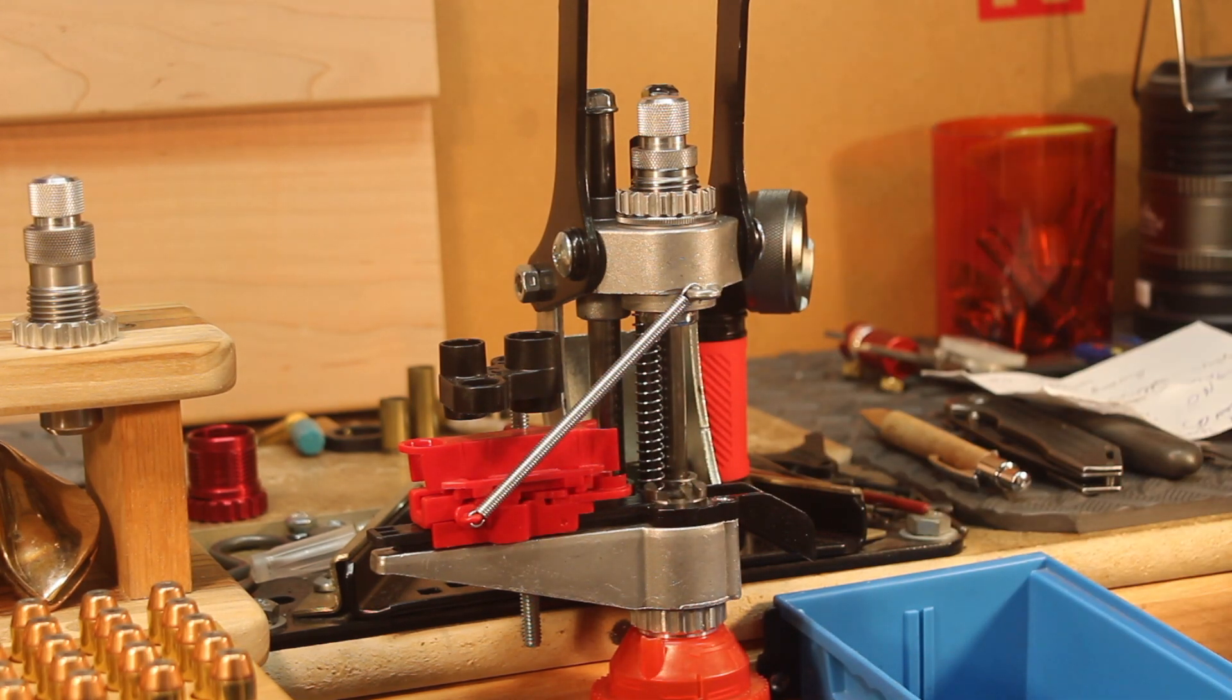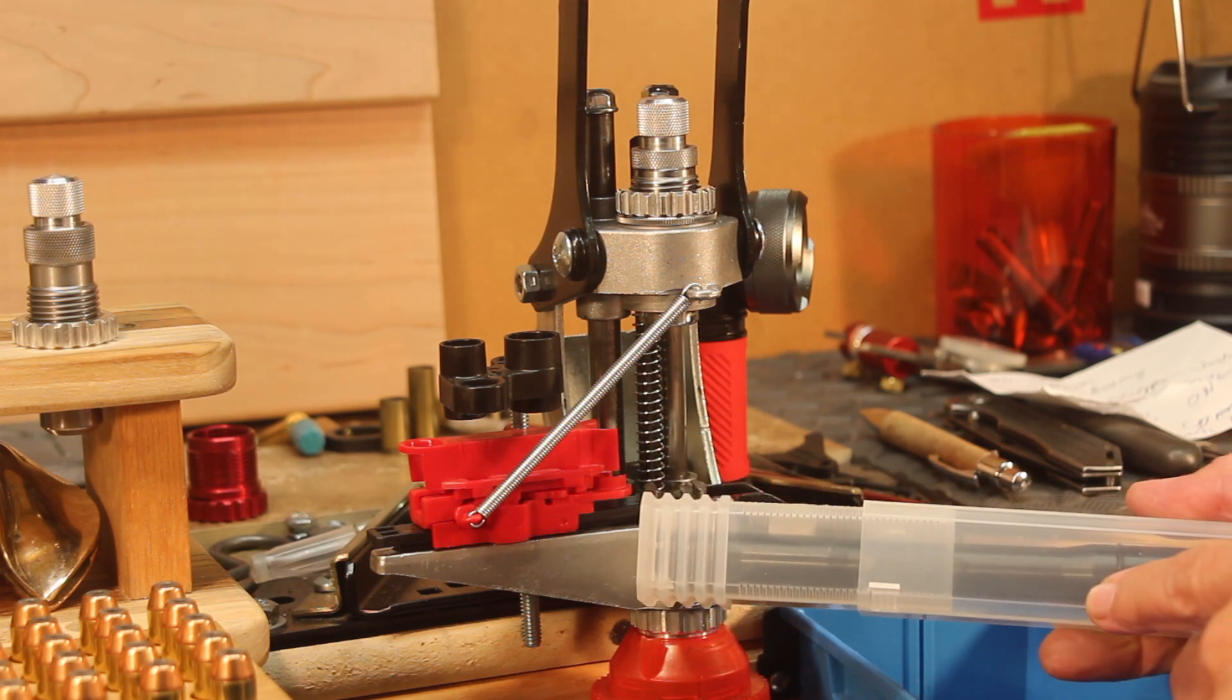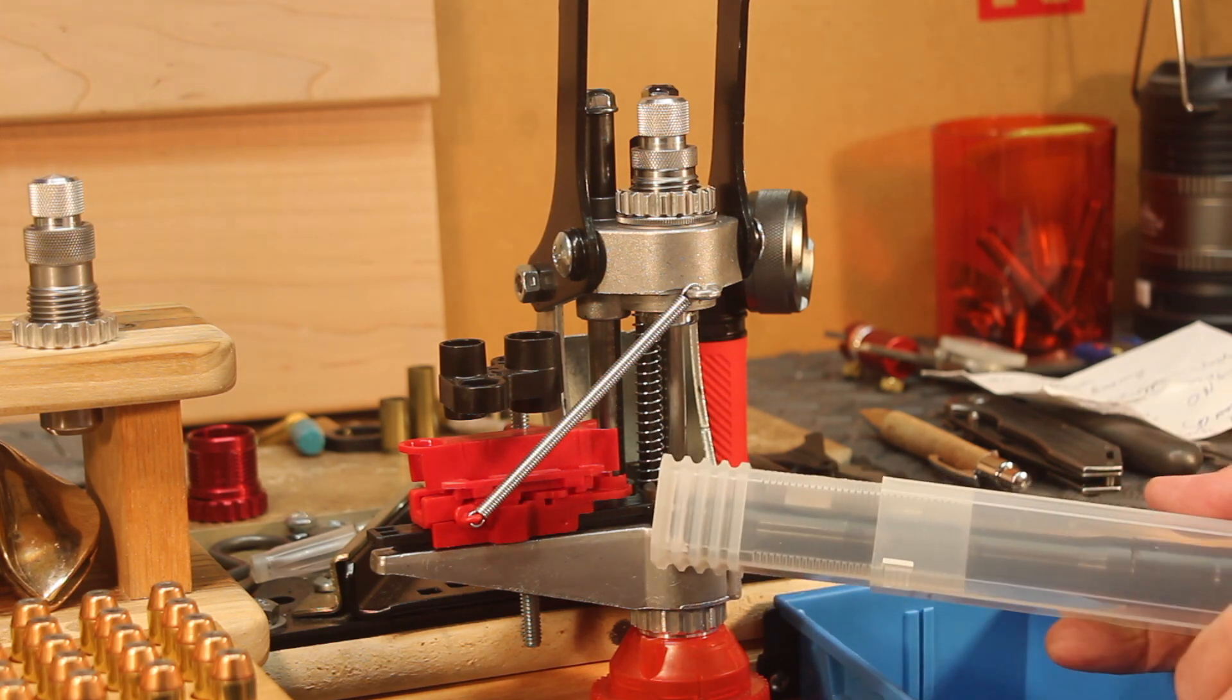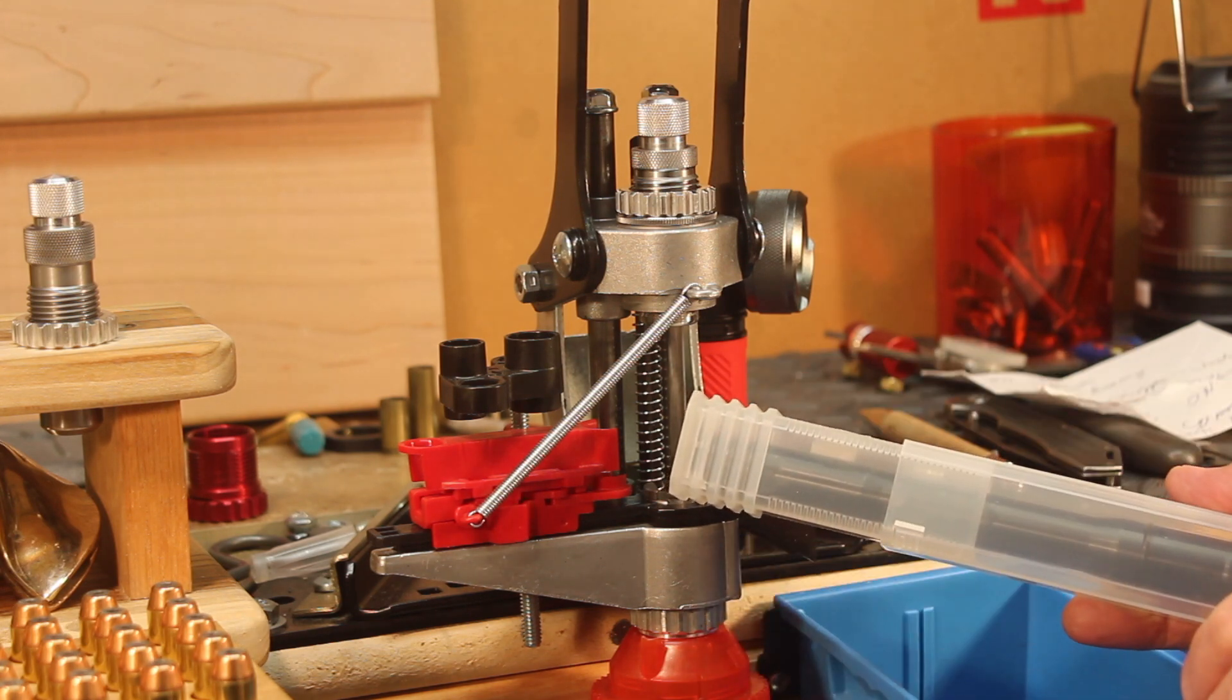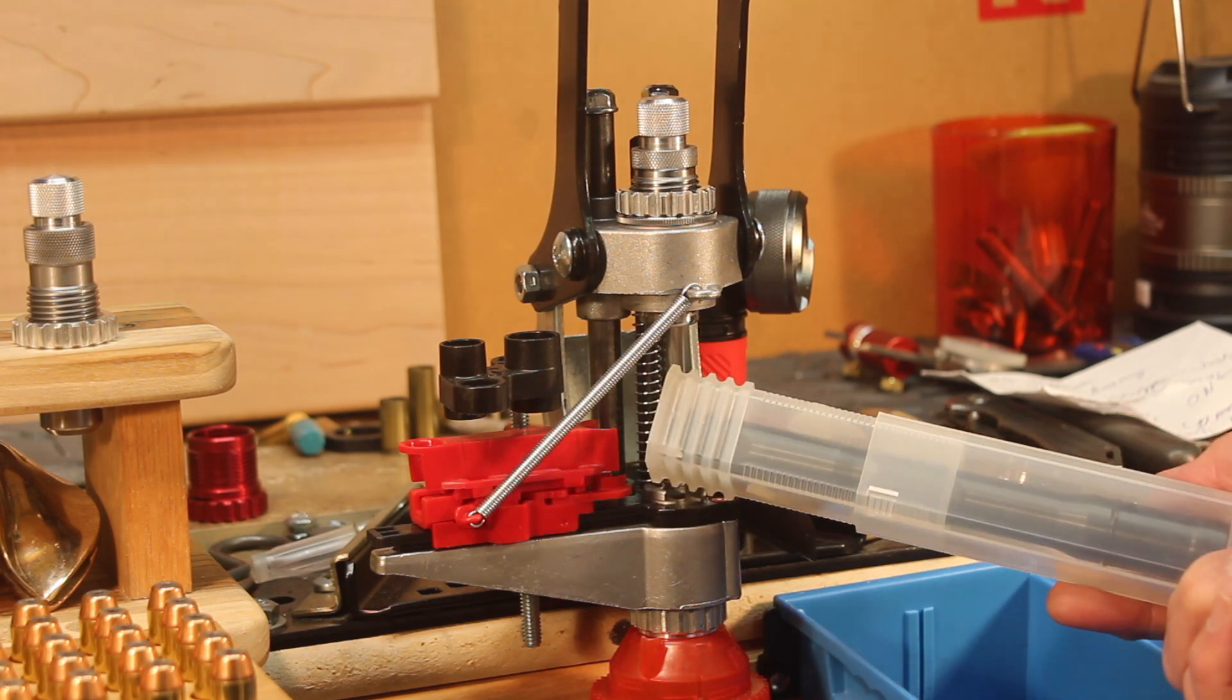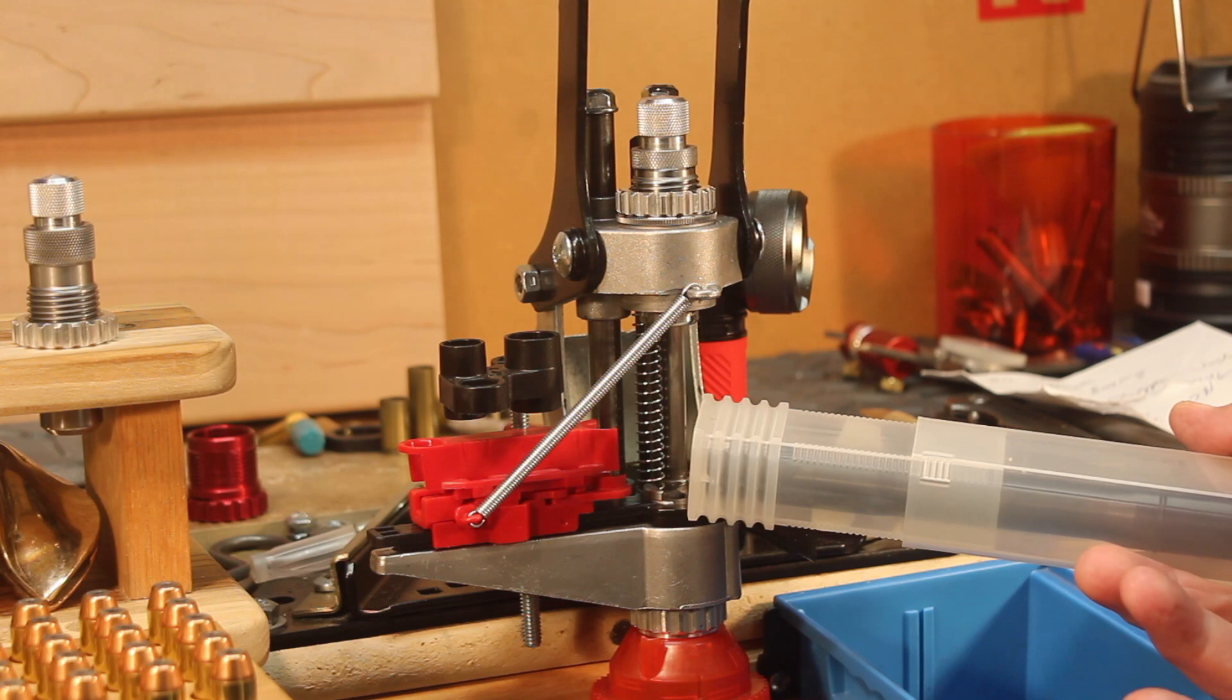Justin tells us about the Chiapa adapters for the 12-gauge. This one happens to be a 38 Special 357 Magnum adapter. And what Justin has seen is on some of his Chiapa adapters, there are little burrs in the chamber area. So if you get any burrs like that, just carefully remove them. Thanks to Justin for that warning on the Chiapa adapters.